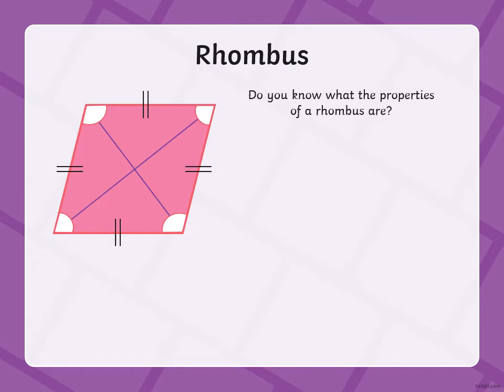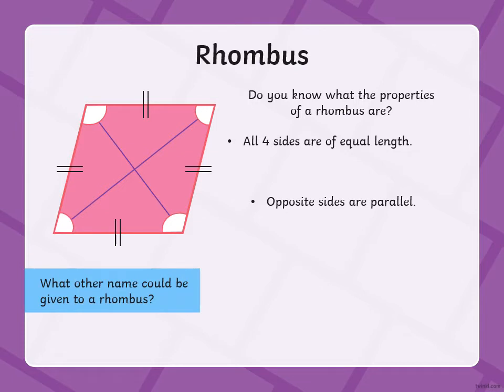Okay, let's take a look at a rhombus. Do you know what the properties of a rhombus are? All four sides are of equal length, and opposite sides are parallel. What other name could be given to a rhombus? We spoke about this yesterday — it's actually part of that shape family. A parallelogram.